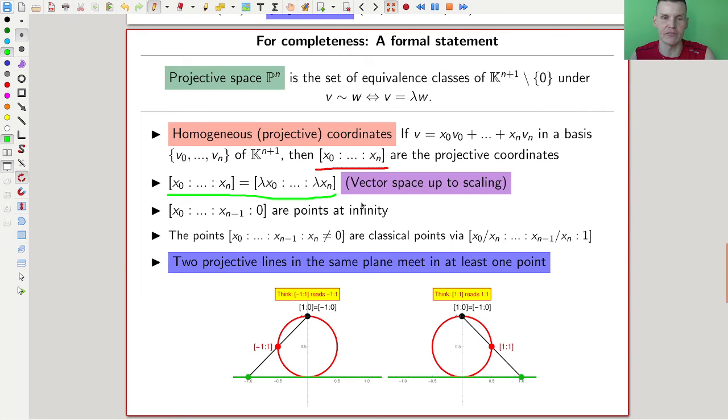Projective geometry is geometry up to scaling. You can just scale them arbitrarily, and this won't change the corresponding point. And then the points at infinity is where one component is zero. And the only confusing thing here is the following. So the classical points are the points where the final coordinate is not zero, and you can just scale it out by dividing by that final component.